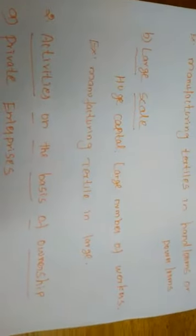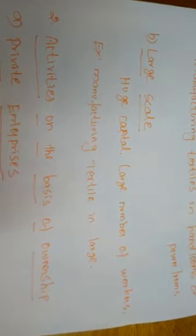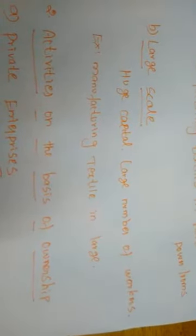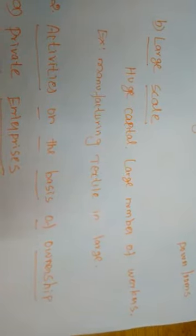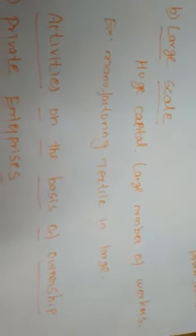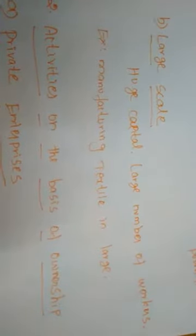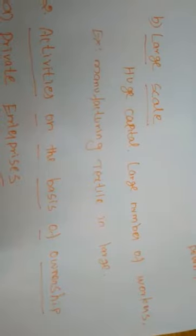Next is Large Scale Industries. This type of business activity is undertaken with the help of huge capital and a large number of workers. The required amount must be above 2 Crores and the number of workers also above 250. For example, manufacturing textiles on a large scale — Raymond Textiles, Tirupur Cotton — and so many textile industries are undertaking their operations at large scale.